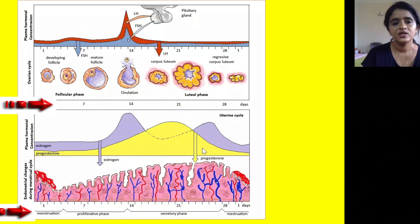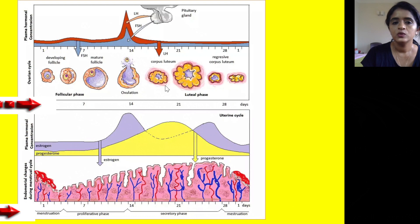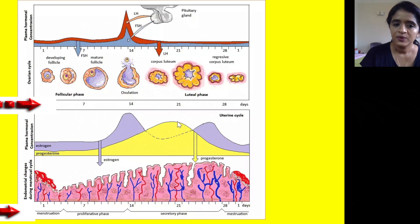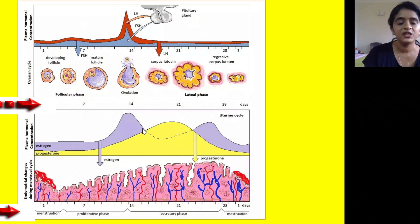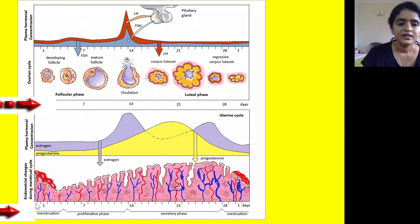During the follicular phase, follicles secrete estrogen, producing one peak in estrogen concentration. During the luteal phase, corpus luteum secretes both estrogen and progesterone, producing a peak in both. Looking at the entire cycle, there are two peaks of estrogen but only one peak of progesterone, which occurs in the luteal phase due to secretion by the corpus luteum.